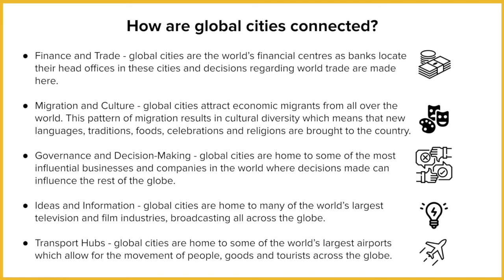There's governance and decision making. Global cities play important roles in deciding how things operate, financially through trade, but also in terms of how businesses run. Big MNCs make their decisions there — like Apple deciding where to put its production. It could also be extra-national organisations: the UN operates around the world and its headquarters is in New York.